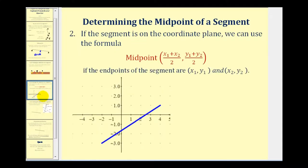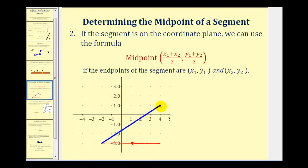The next way to determine a midpoint is if the segment is on the coordinate plane — we can take the average of the x-coordinates and the average of the y-coordinates of the endpoints, and this will give us the coordinates of the midpoint. So x₁ plus x₂ divided by two gives us the x-coordinate of the midpoint, and y₁ plus y₂ divided by two gives us the y-coordinate of the midpoint.